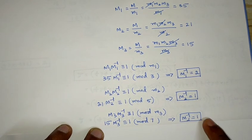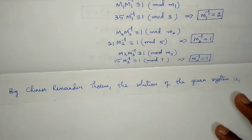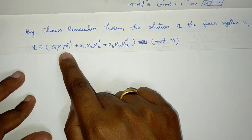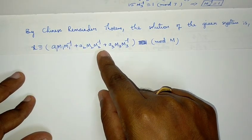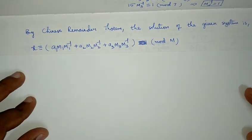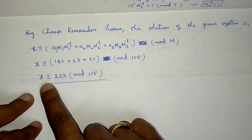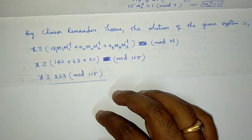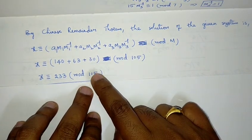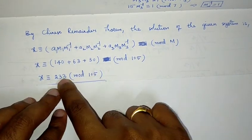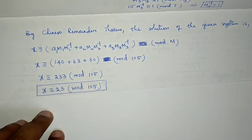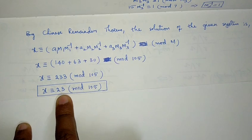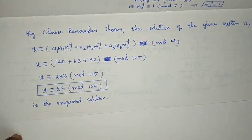By the Chinese Remainder Theorem, the solution is x ≡ a1·M1·M1_inv + a2·M2·M2_inv + a3·M3·M3_inv (mod M). Substituting the values, we get x ≡ 233 (mod 105). Since 233 − 2×105 = 233 − 210 = 23, we have x ≡ 23 (mod 105) as the required solution.